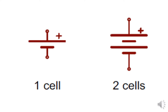In everyday life, cells are almost always called batteries, but this is scientifically incorrect. In science, a battery is made of two or more cells joined together. The symbol of a battery of two cells joined together is as shown in the slide.